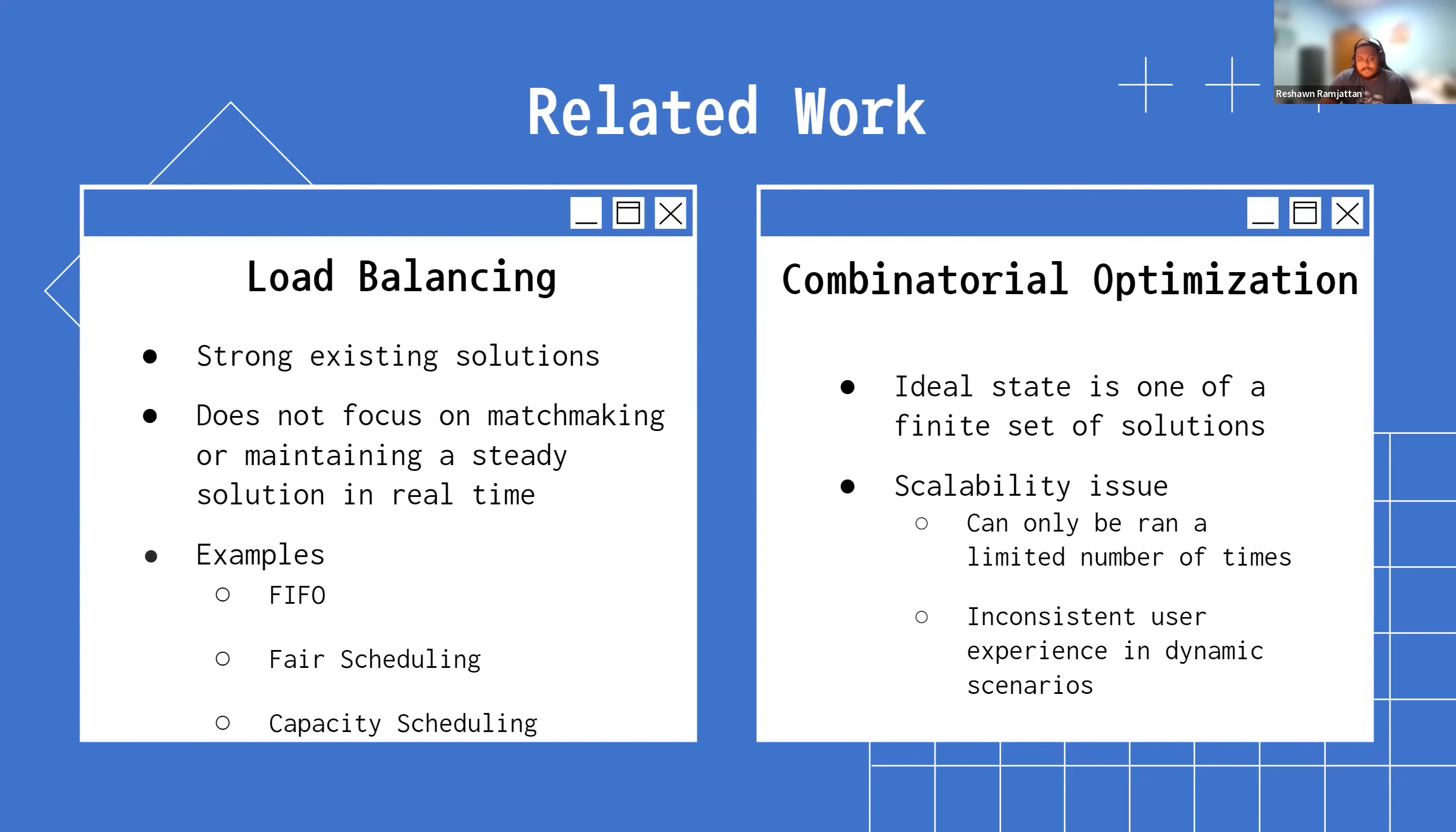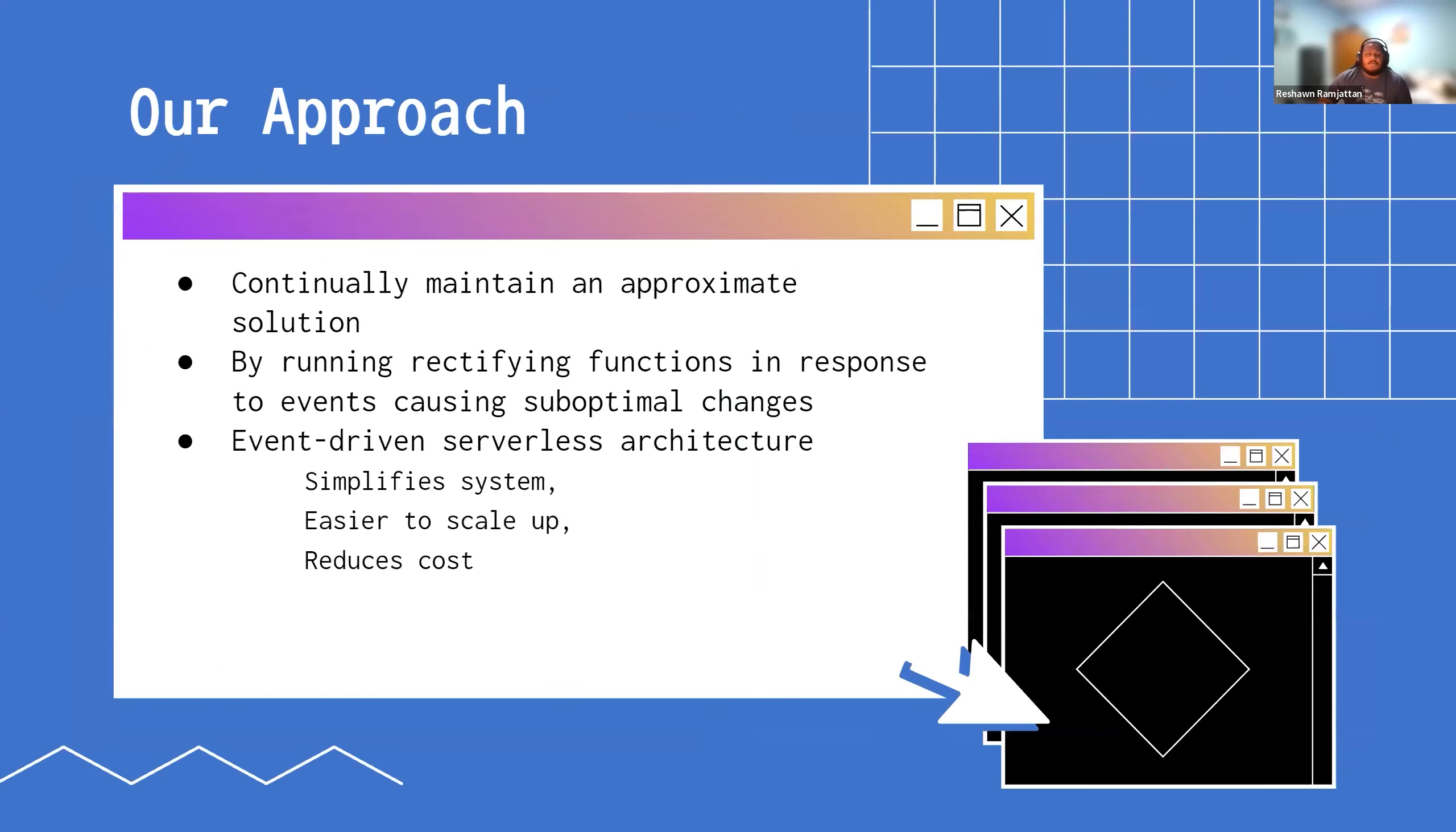That leads to our approach. We look at continually maintaining an approximate solution, and we'll do that by identifying what are the events that cause suboptimal changes in our system and what can we do to immediately rectify those changes. By doing it this way as well, it makes it easier for us to have a serverless architecture that's event driven, and that ultimately simplifies our system, makes it easier to scale, and as a result makes it cheaper.